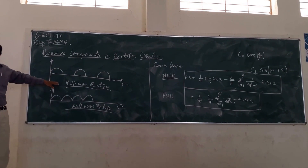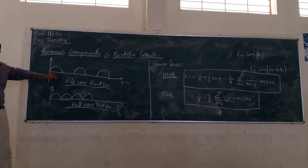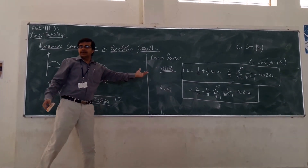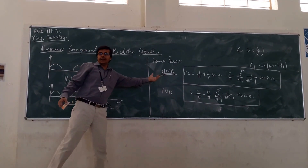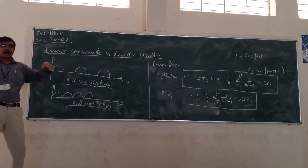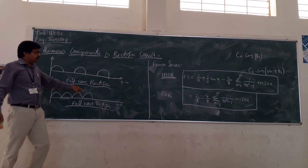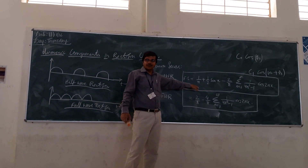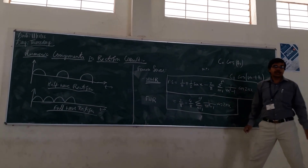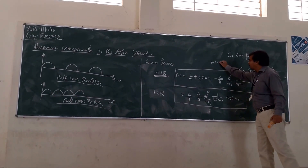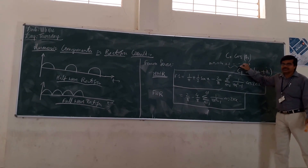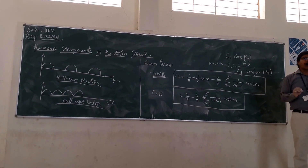If you are seeing your half-wave rectifier, this is the waveform of your half-wave rectifier. It is also periodic in nature, so we can decompose it using the Fourier series. This is the equation for your half-wave rectifier. If somebody is asking what is the DC component, you can put N equal to zero. If somebody is asking what is the fundamental component, you can put N equal to one. And for the harmonics, you can consider N equal to two. These terms are the harmonics in case of your half-wave rectifier.